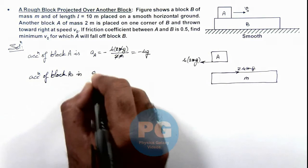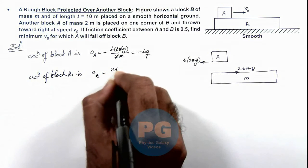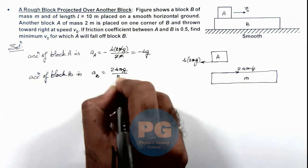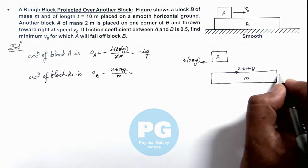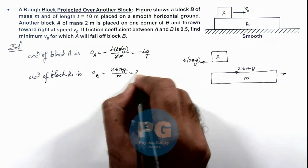Acceleration of B is 2μmg divided by m. So the acceleration with which block B will accelerate will be 2μg.